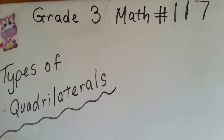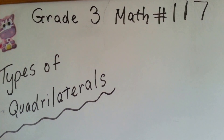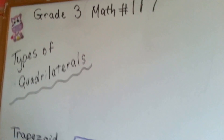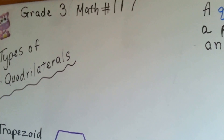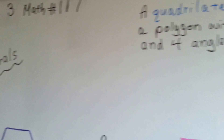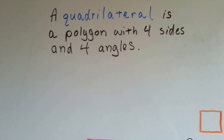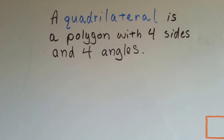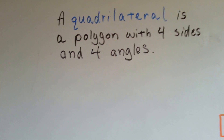Grade 3 math, number 117: types of quadrilaterals. We've been talking about geometry for the last few videos, and we're going to continue on and discuss quadrilaterals now. It's a polygon with four sides and four angles. That sounds pretty easy.